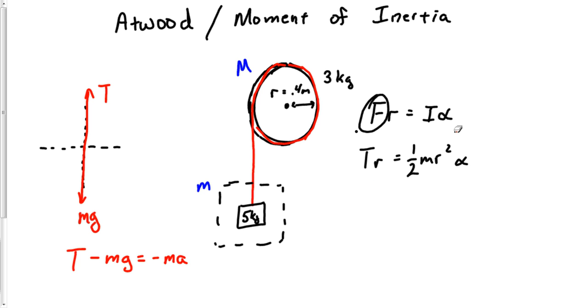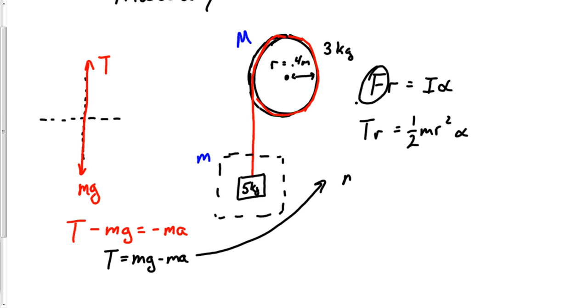I need to get these two. Again, the physics is already over. T minus MG equals negative MA and FR equals I alpha. We're done with the problem. All we've got to do is combine these together. All I've got to do is solve this equation for T over here. So T would be MG minus MA. So let's plug that back in over here on this other side. That would be MG minus MA times R is equal to one half MR square alpha.